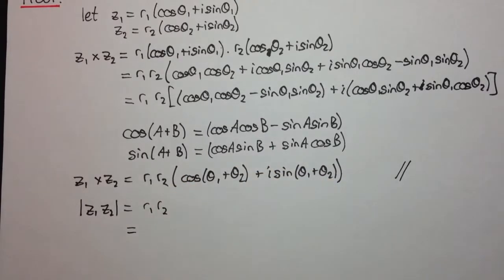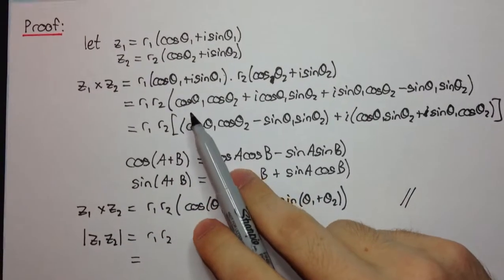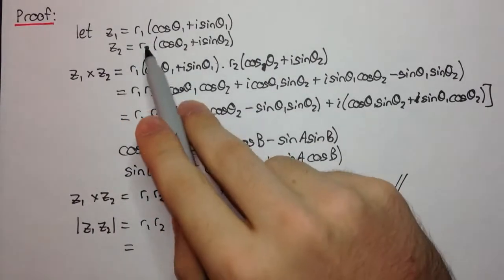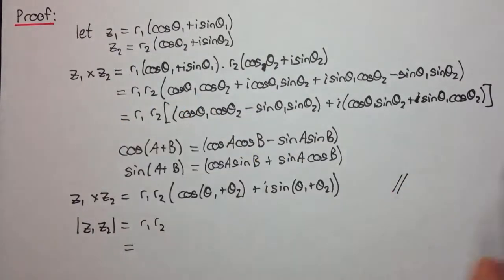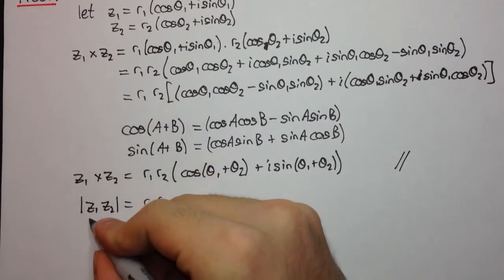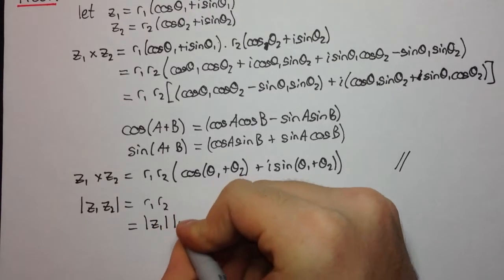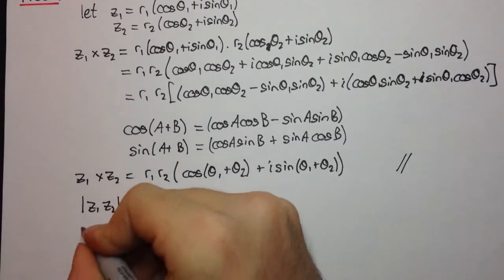But what's r1 and r2? r1, if we look back up here, that's the modulus of z1. And similarly, r2 is the modulus of z2. And so we have that the modulus of z1 z2 is equal to the modulus of z1 times the modulus of z2.